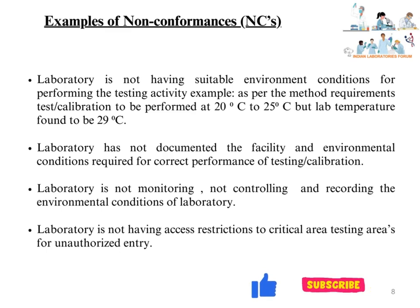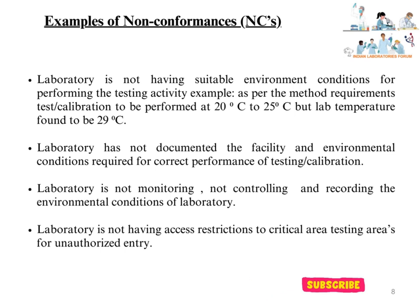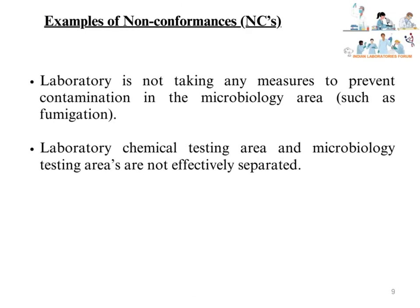Examples of non-conformances as per Clause 6.3: The laboratory is not having suitable environmental conditions for performing the testing activity — for example, the test or calibration is to be performed at 20°C to 25°C but lab temperature was found to be 29°C. The laboratory has not documented the facility and environmental conditions required for correct performance of testing or calibration. The laboratory is not monitoring, not controlling, and not recording environmental conditions. The laboratory is not having access restrictions to critical areas of testing or calibration for unauthorized entry. The laboratory is not taking any measures to prevent contamination in the microbiology area, such as fumigation. The laboratory chemical testing area and microbiology testing areas are not effectively separated.